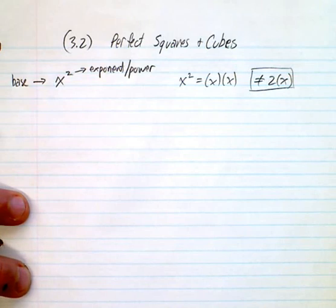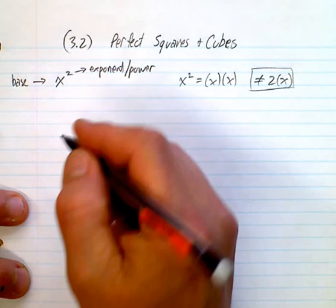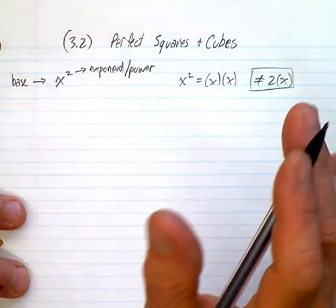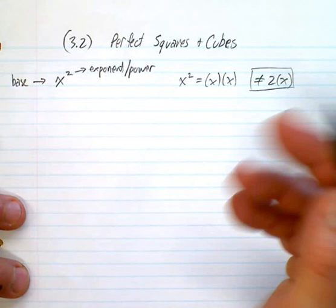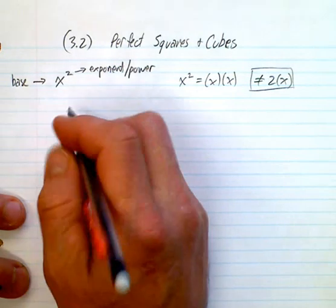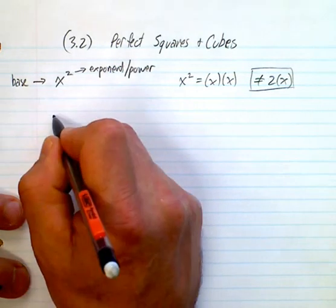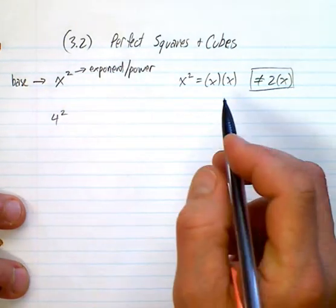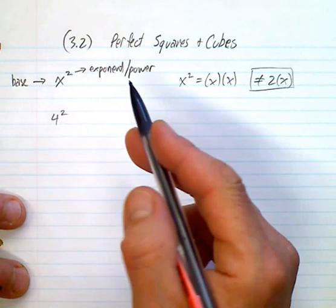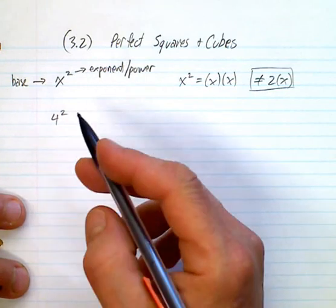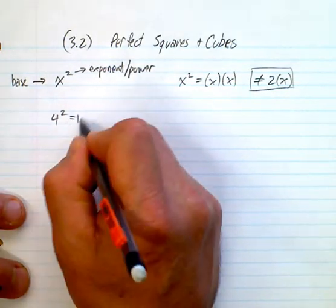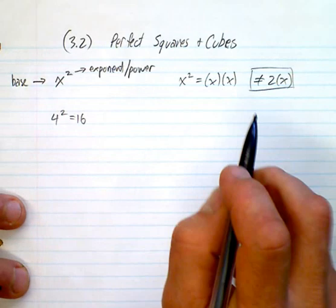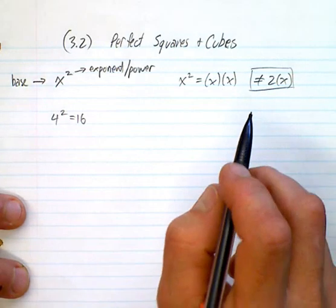One of the cool things about a square is it's a very geometrical kind of explanation. Because if you have something like 4 squared, some of you will hopefully know right away that that's equal to 16 — it's not equal to 4 times 2, which is 8.